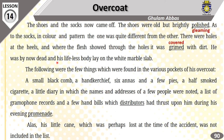By now he was dead, and his lifeless body lay on the white marble slab. The following items were found in the various pockets of his overcoat: a small black comb, a handkerchief, six annas and a few pies, and a half-smoked cigarette. The list of gramophone records — which had probably been lost at the time of the accident — was not among them.